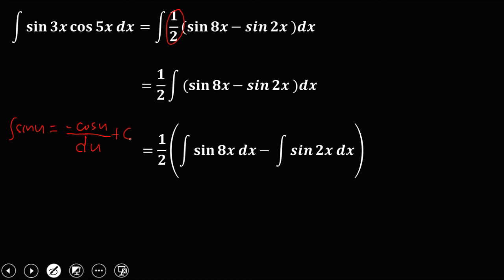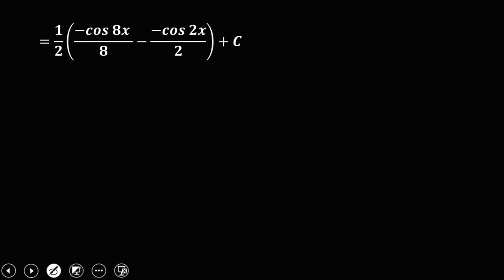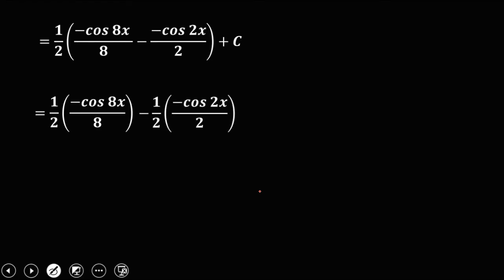To get the integral of sine 8x dx: u is 8x, so it becomes negative cosine 8x over 8. Then minus the integral of sine 2x dx, which gives negative cosine 2x over 2, since the derivative of 2x is 2. Then plus C. So we have 1 half times (negative cosine 8x over 8) minus 1 half times (negative cosine 2x over 2), plus C.